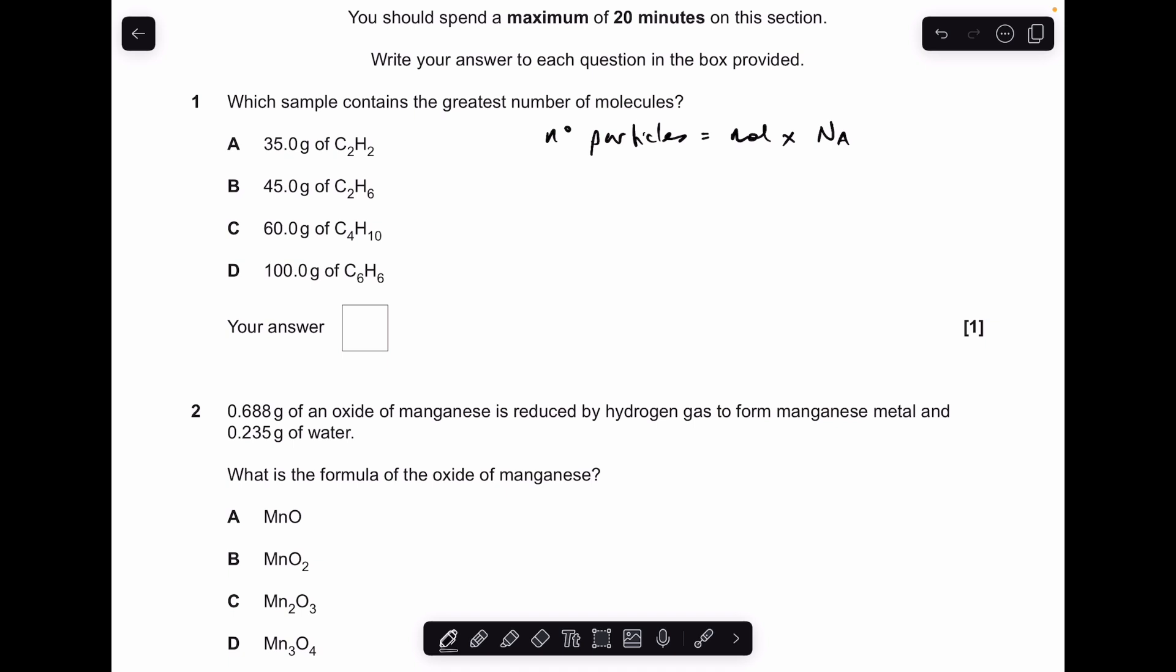Okay, so let's make a start. To calculate the number of particles, molecules in this case, we would work out the moles of molecules and multiply by Avogadro's number. Obviously, the greater number of moles will have the greater number of particles. So all we need to do is work out the moles of each of those chemicals. That's just mass over MR each time. So there's the moles there. You can see that B has the highest number of moles, so that would have the greatest number of molecules.